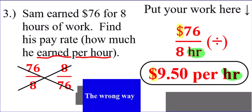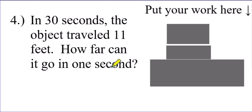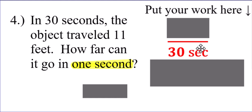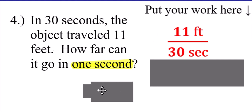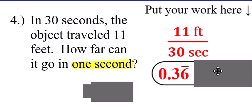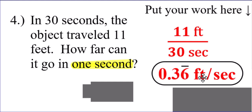Problem number four: in 30 seconds the object traveled 11 feet — how far can it go in one second? Remember, 'for one second' is like saying 'per second,' so seconds have to be in the denominator. The 11 feet goes in the numerator. Divide 11 by 30 — not the other way around. This gives you 0.36666666, which goes on forever. Put the repeating bar on the sixes — 0.36 repeating — and the units are feet per second.